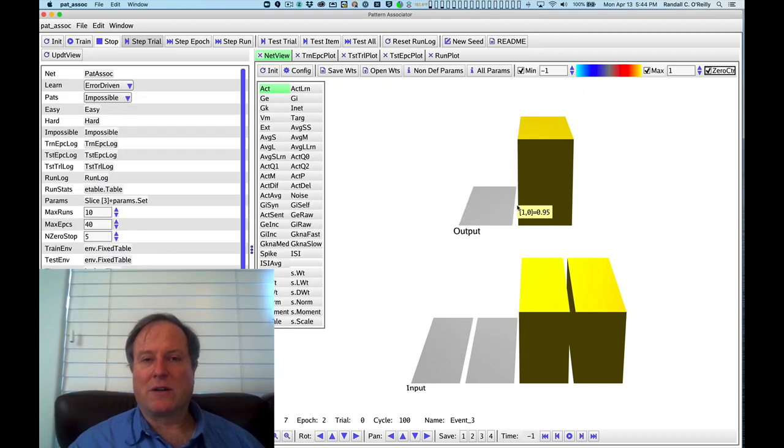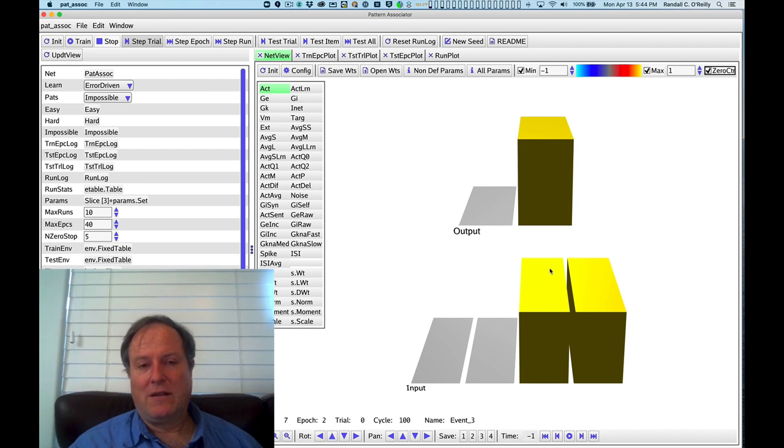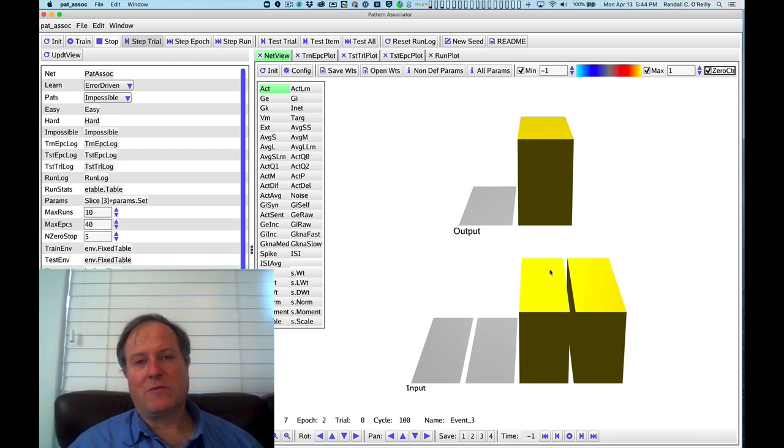You can't use neural networks because they can't solve this problem, just as we saw here. But one thing they absolutely failed to appreciate and everybody else failed to appreciate is it's impossible to set any pattern of weights manually to solve this problem in a two-layer network.